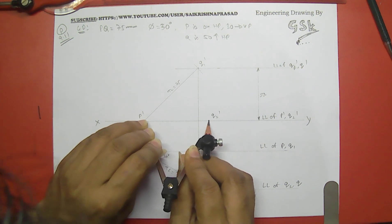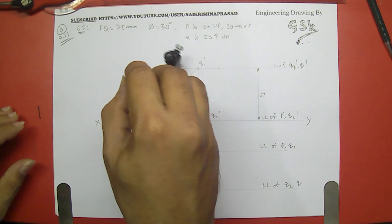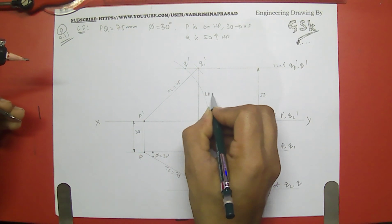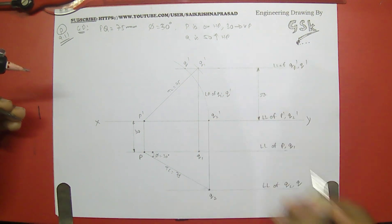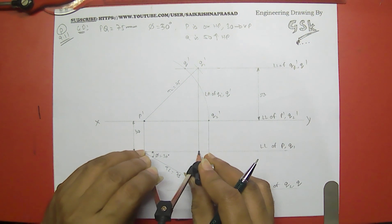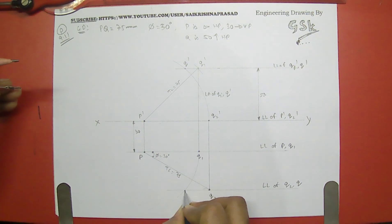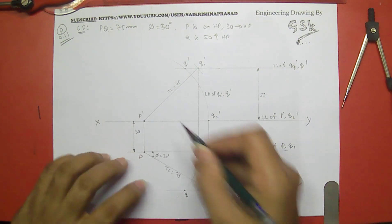I measure the distance from the locus arc to locate Q-dash, and then Q, completing the construction. PQ is the final top view and P-dash Q-dash is the final front view.